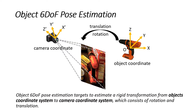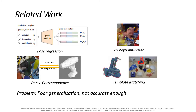The problem is to estimate a transformation from the object coordinate system to the camera coordinate system. Previous works include pose regression, 2D keypoint-based, and so on. However, they either suffer from poor generalization or are not accurate enough.